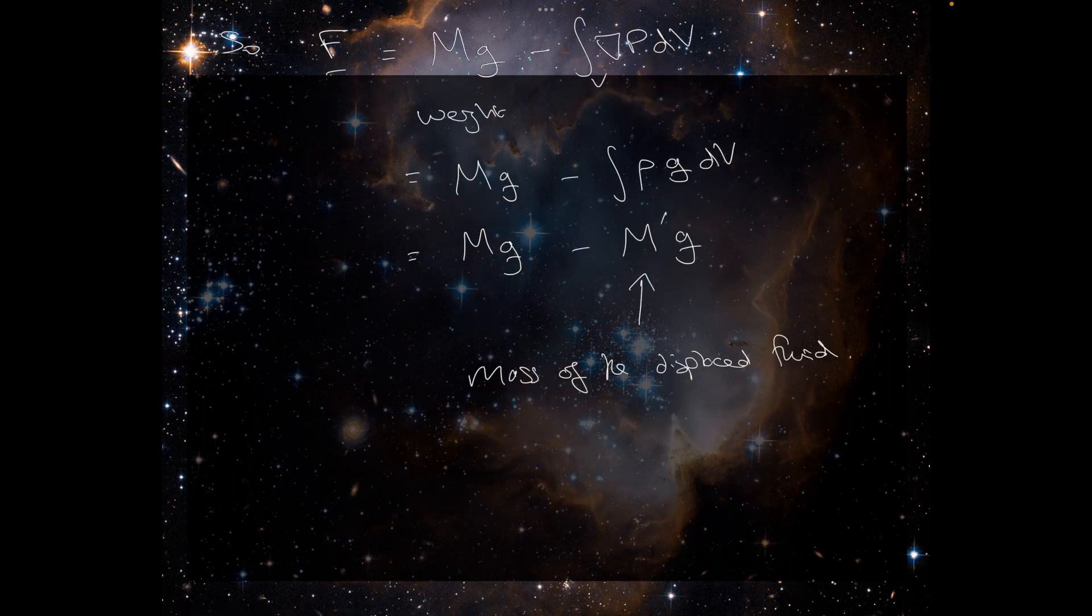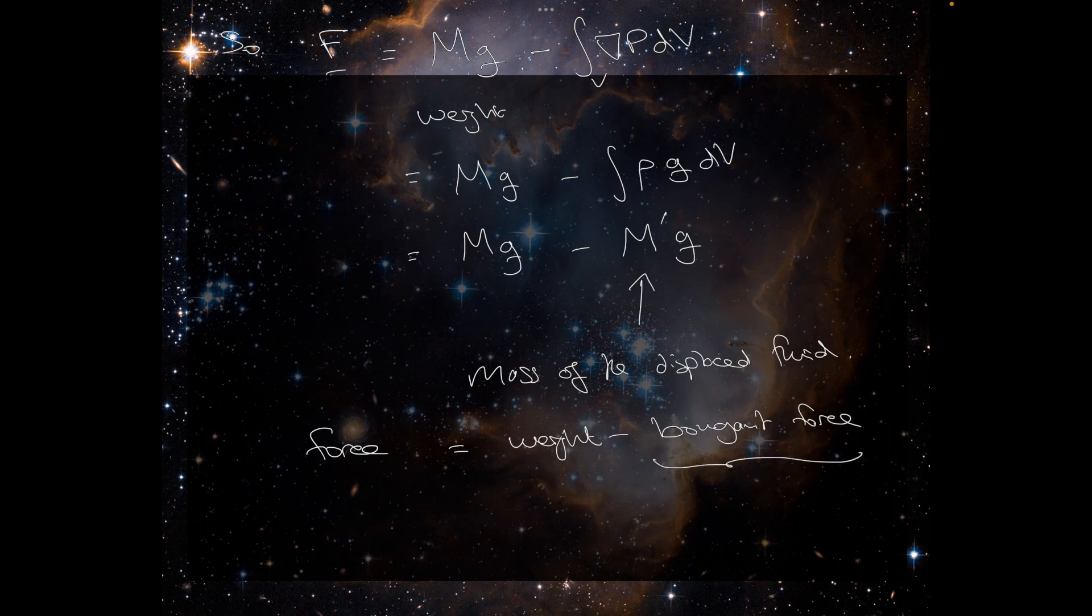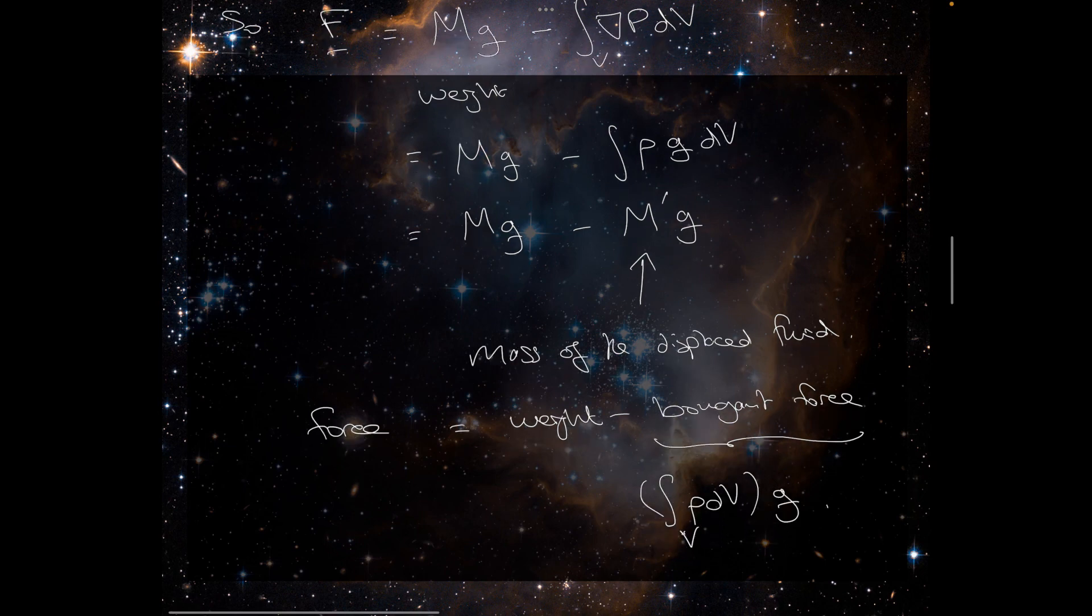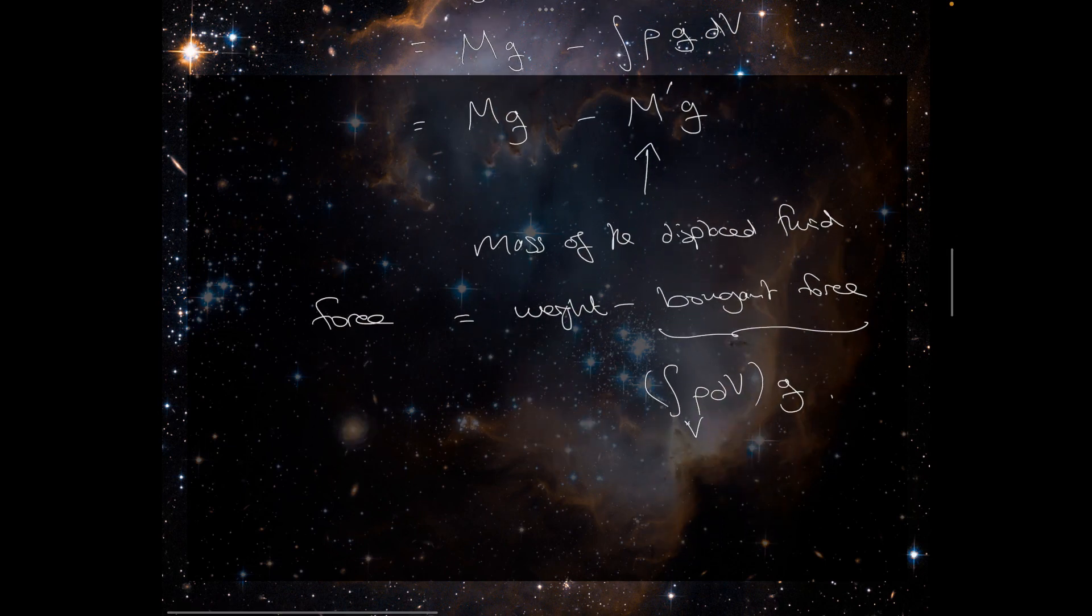So the force is equal to the weight minus the buoyant force. And that's just equal to the integral of rho dV over the volume, which is the mass of the displaced fluid times gravity. And there you have it. That is Archimedes principle.